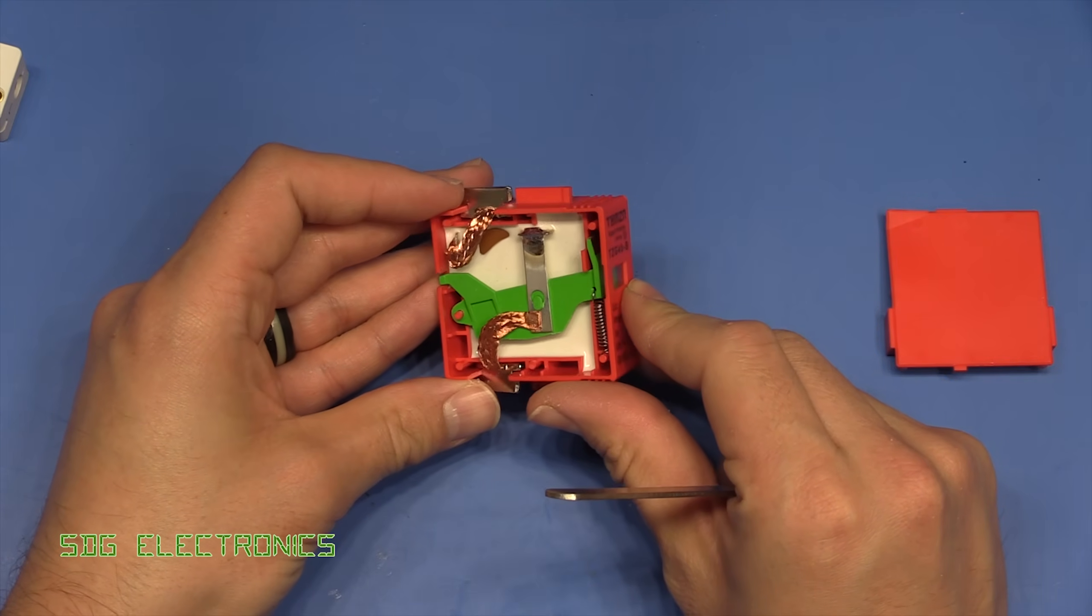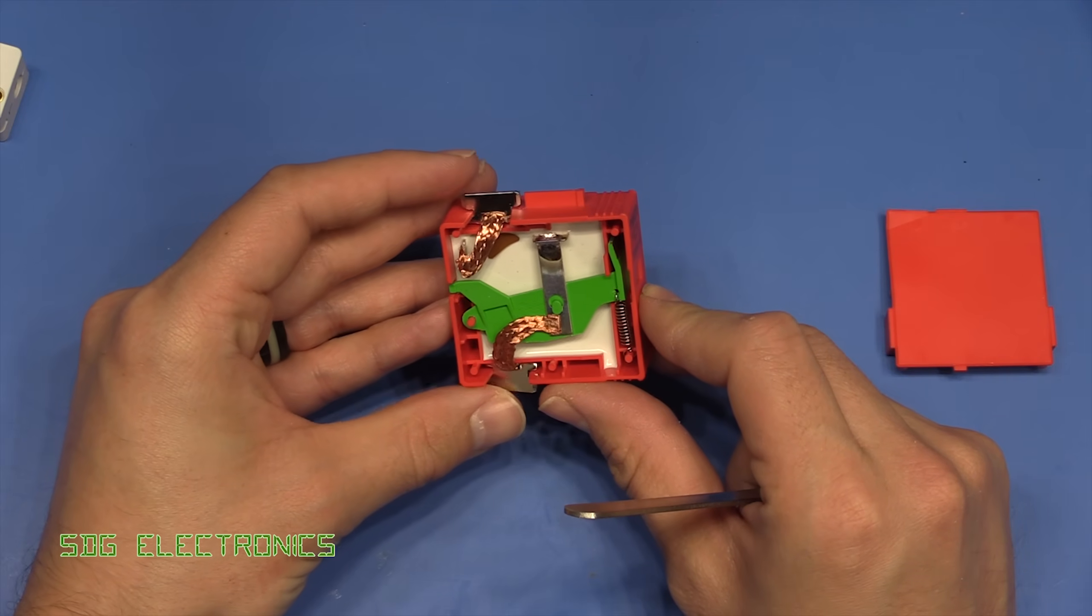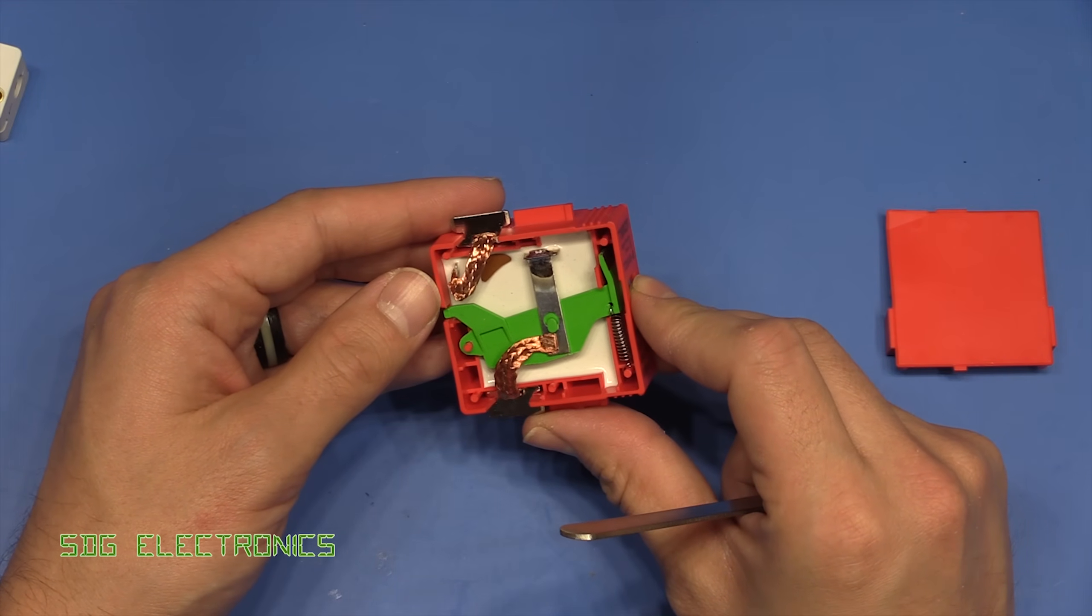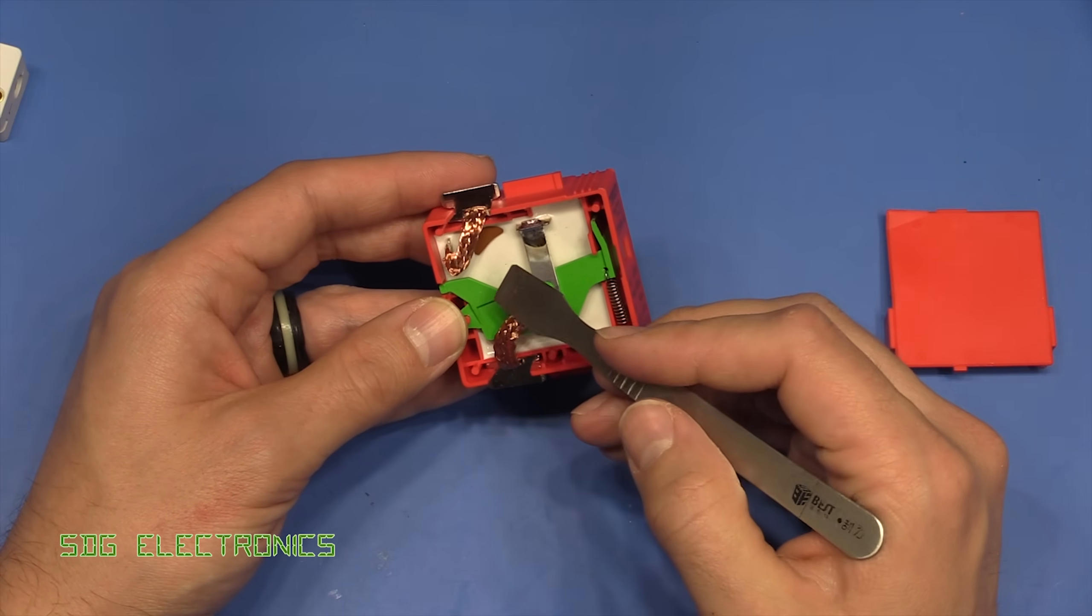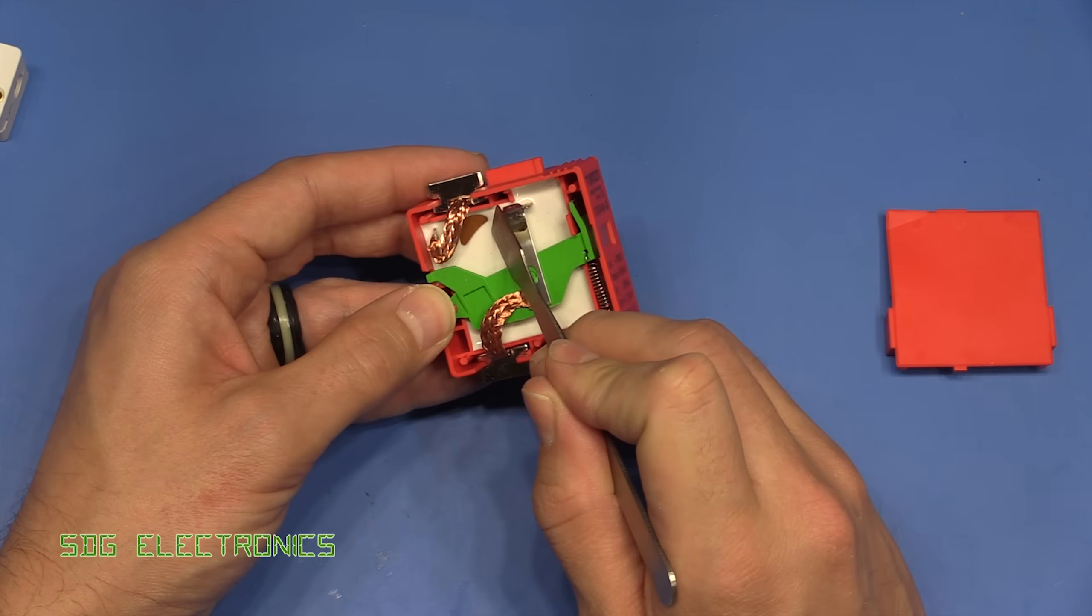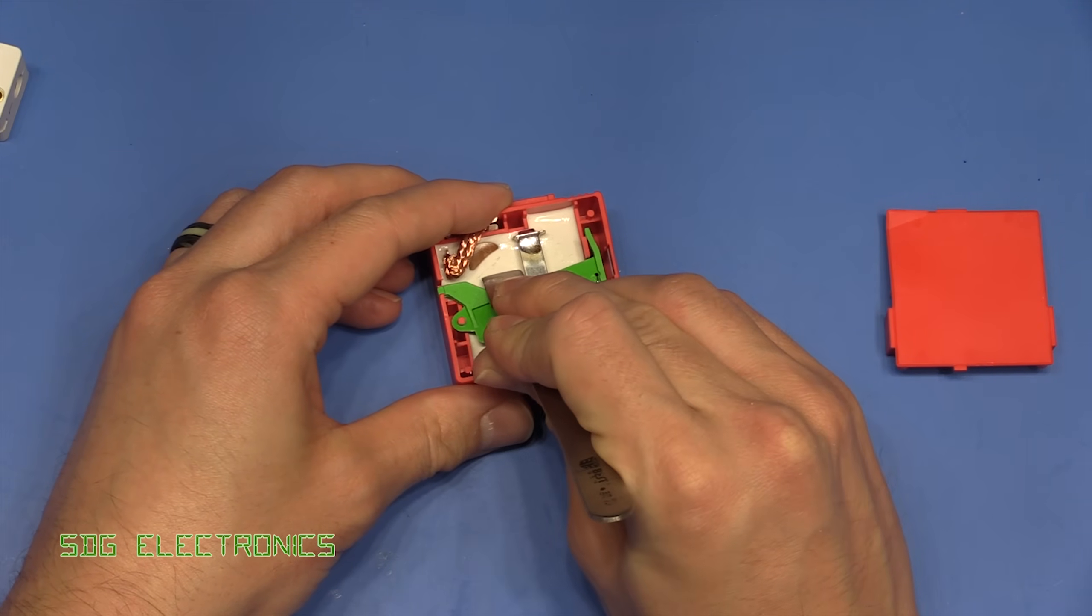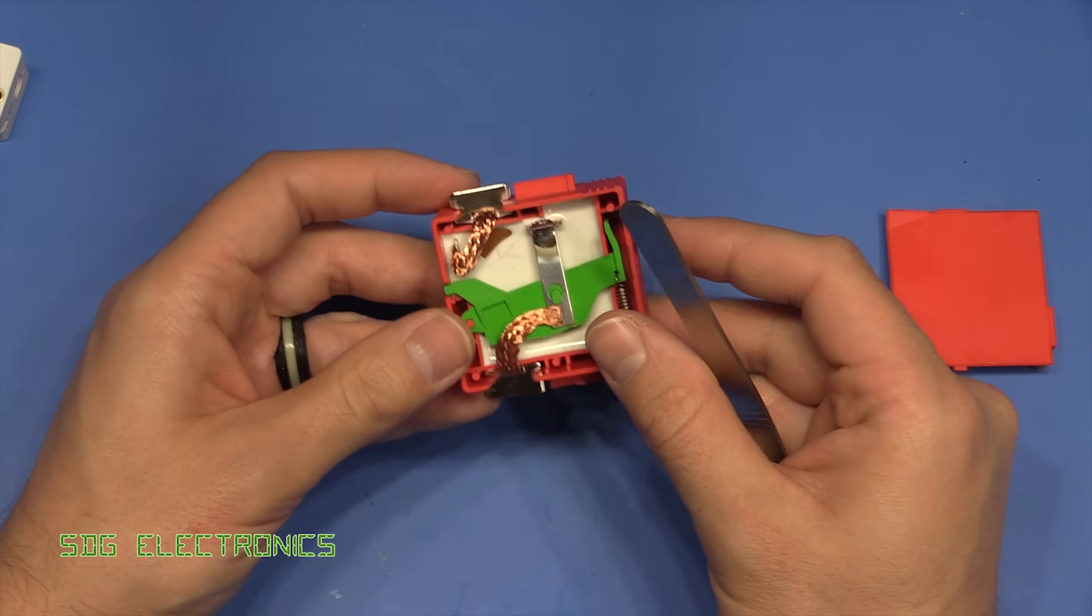And there we go, so unfortunately it looks like it's potted so we're not going to be able to see fully what's inside. We've got the two large connections here, we can definitely see what looks to be a metal oxide varistor in the potting compound, but that unfortunately is that very hard potting compound that we're not going to be able to see inside.